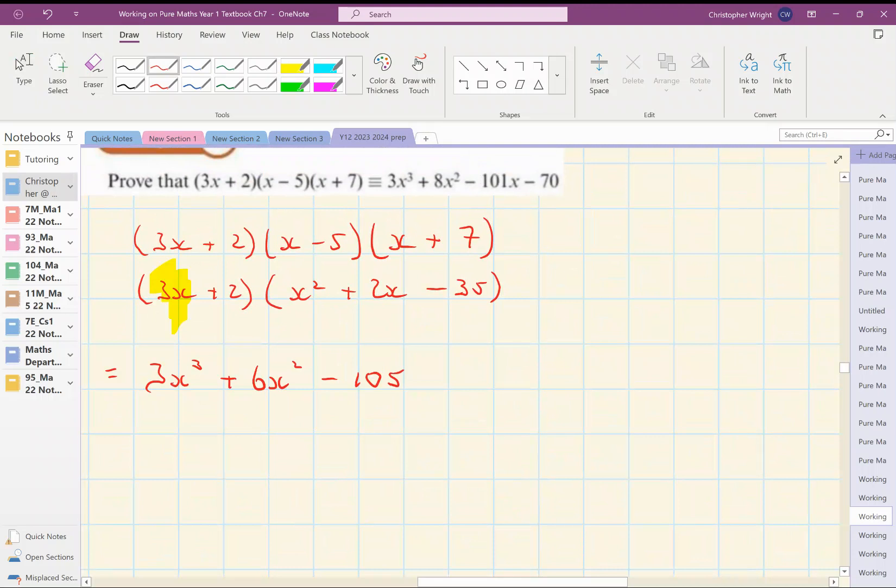So that's 3x multiplied by everything in the second bracket. And now I'm going to do plus 2 multiplied by everything in the second bracket. So I'm going to end up with plus 2x squared plus 4x minus 70.